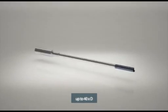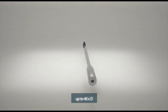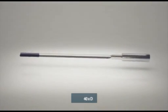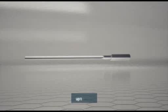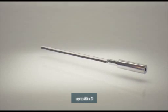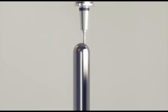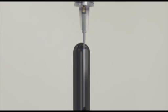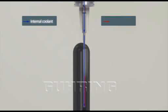Gun drills with a brazed-on solid carbide head can handle a drilling depth of up to 40 times the hole diameter, whereas gun drills made of solid carbide can reach a depth of up to 80 times the diameter in one step. Cooling is done via interior channels in the drill, which are also used for chip removal.